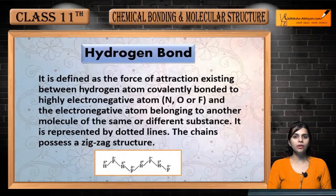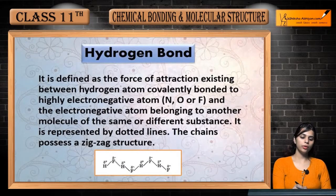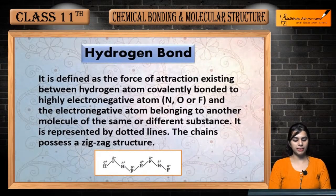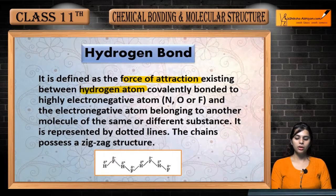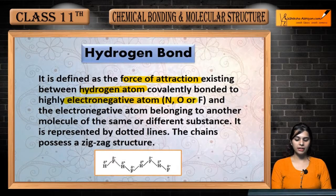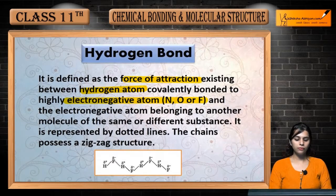Hello students, now we will talk about Hydrogen bond. What is Hydrogen bond and how do they form? It is defined as a force of attraction existing between a Hydrogen atom covalently bonded to a highly electronegative atom — Nitrogen, Oxygen, and Fluorine.